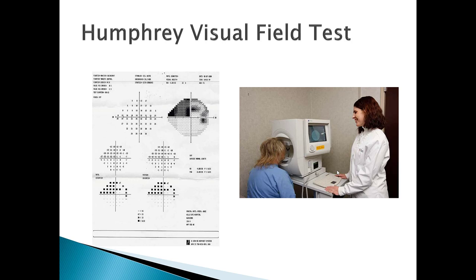The Humphrey Visual Fields test is ordered when you suspect a patient is losing peripheral vision. It flashes lights in the peripheral region and maps which areas are not seen. Dark boxes on the printout indicate missed flashes of light. For example, dark boxes in the upper outer region of the map mean the patient had visual field loss in that upper outer region. This test is used when you suspect a visual field deficit.